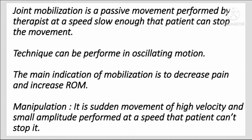If a patient has shoulder flexion only up to 60 degrees, we will start mobilization: first taking it from 0 to 60 degrees, then 0 to 63 degrees, then 0 to 65 degrees — this type of movement is called oscillation. The main indication of mobilization is to decrease pain and increase range of motion.